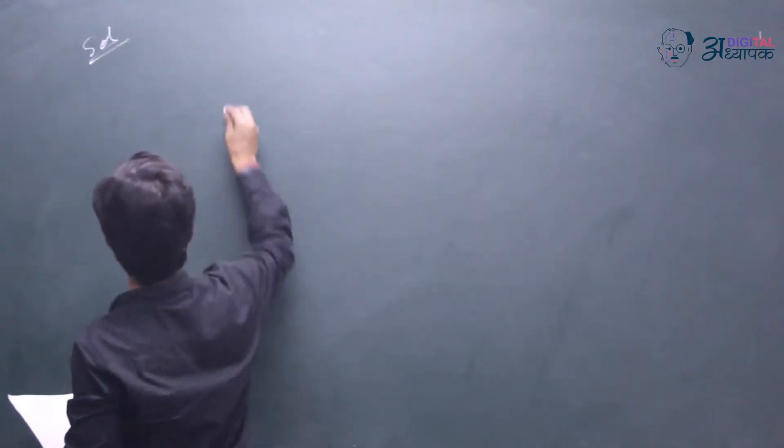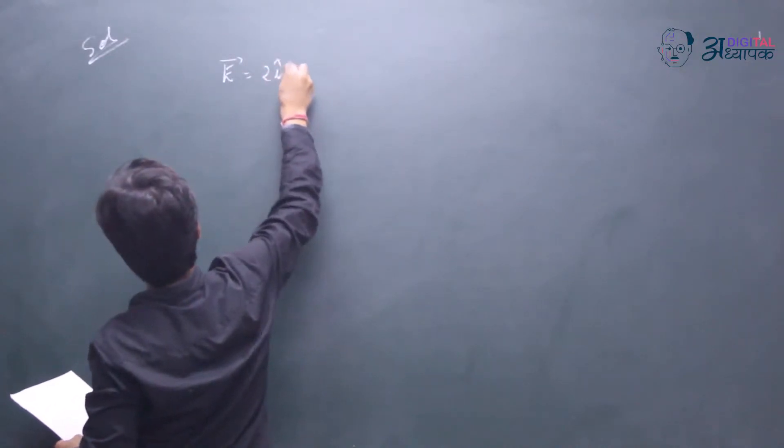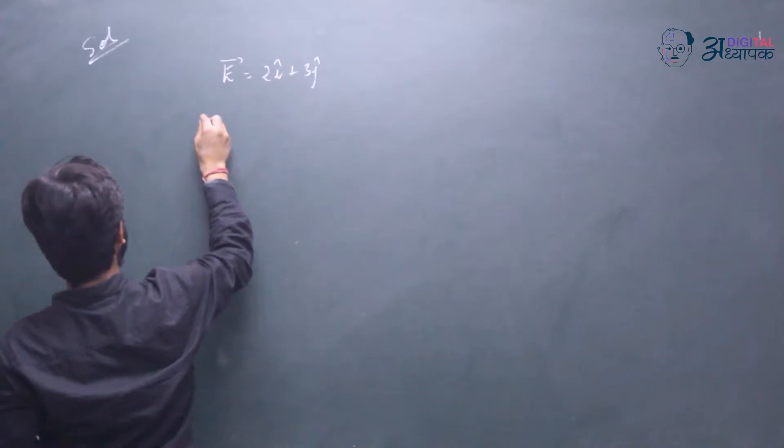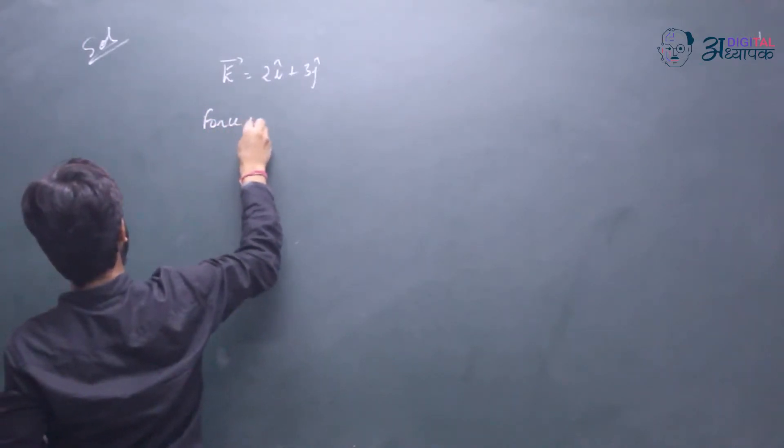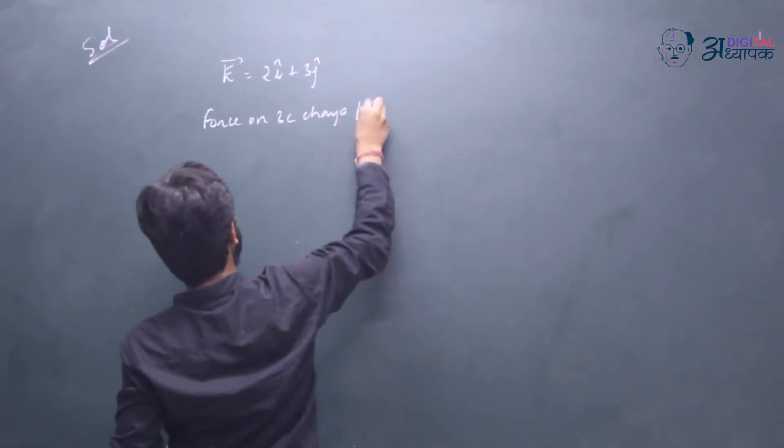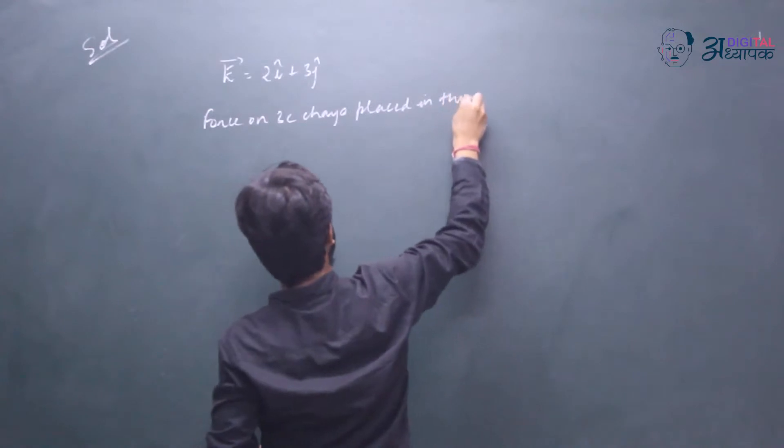So, electric field - this is a very simple problem, a simple vector application. 2i cap plus 3j cap. And we have to find out the force on a 3 coulomb charge placed in this electric field.